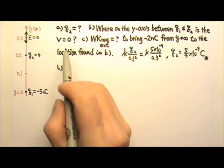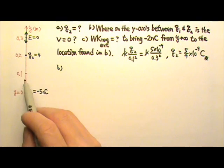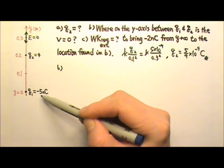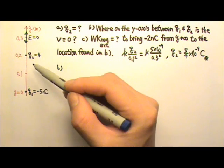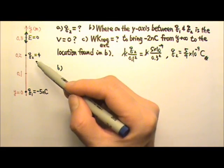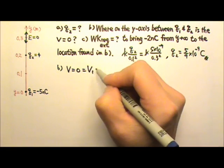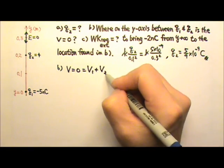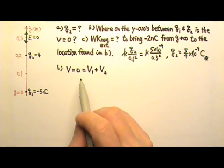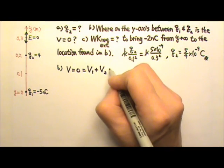For Part B, we want the electric potential to be zero somewhere between y equals zero and y equals 0.2 meters. Q1 is a negative charge, so it gives a negative electric potential. Q2 is a positive charge, so it gives a positive electric potential. To have V equals zero, the voltage provided by the two point charges must add up to zero. Electric potential is just a scalar, so we're adding the negative scalar to the positive scalar.